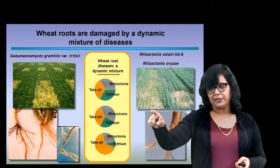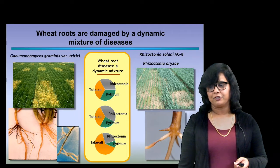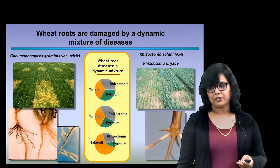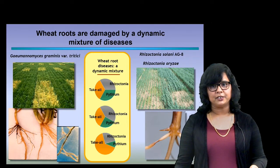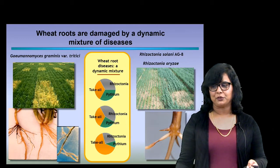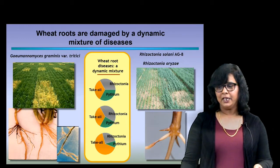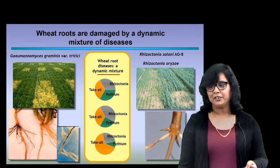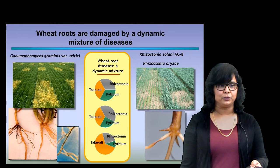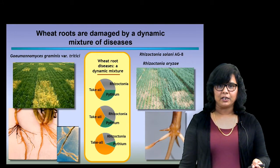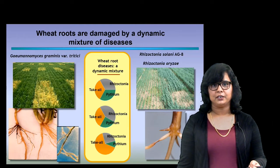Depending on the type or amount of irrigation, you can have a combination of three different types of disease: take-all, Rhizoctonia root rot, or Pythium root rot. Take-all is a colloquial common name, whereas Rhizoctonia and Pythium are derived from the actual names of the fungi that cause those diseases. If you look at the top left, you can see why take-all is not called by the fungus name — because the fungus that causes it is quite a mouthful: Gaeumannomyces graminis var. tritici. We call it GGT for short, so take-all is a disease caused by GGT, which is a fungus.